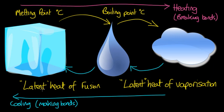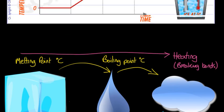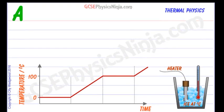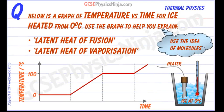That's the idea of these two phrases — all about making and breaking bonds. So let's take a look at this flashcard. We've got a graph of temperature versus time for ice, heated from zero degrees Celsius, which is its melting point. Use the graph to help explain the latent heat of fusion and the latent heat of vaporization using the idea of molecules or particles.